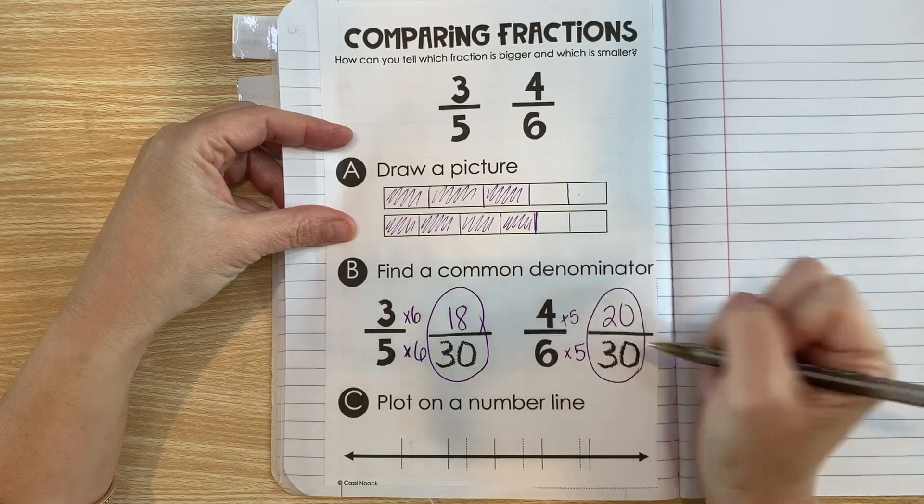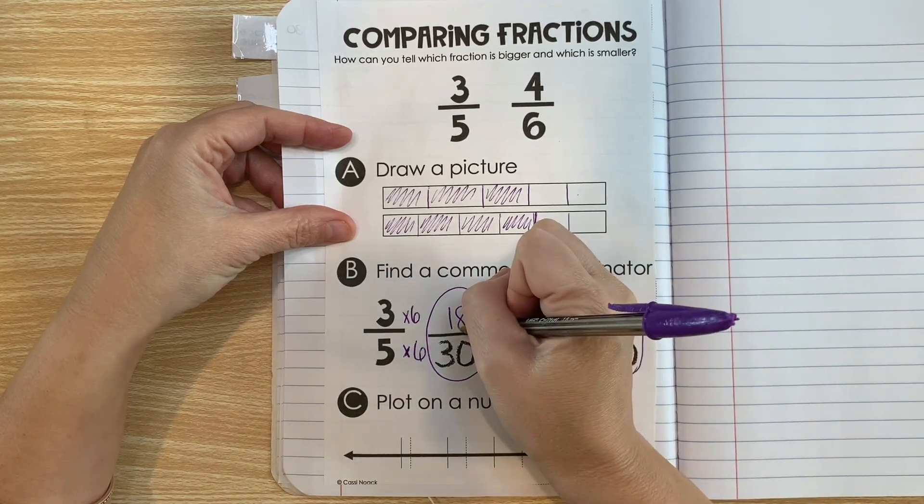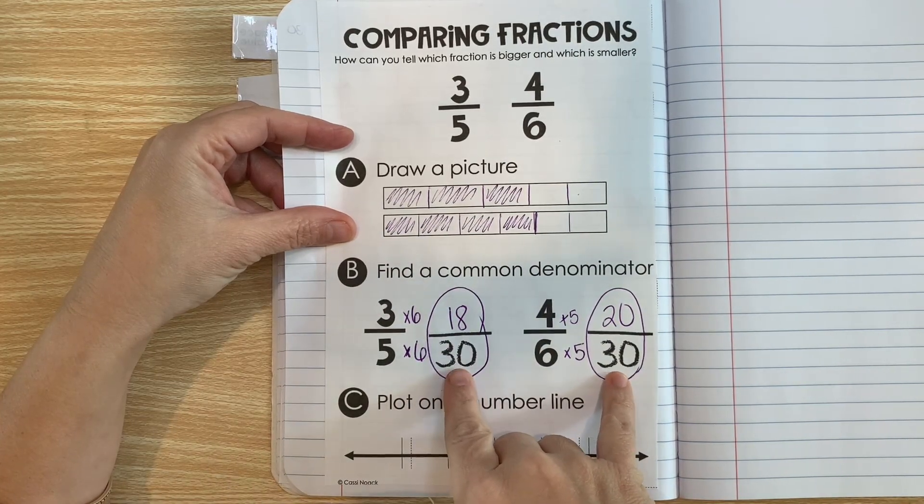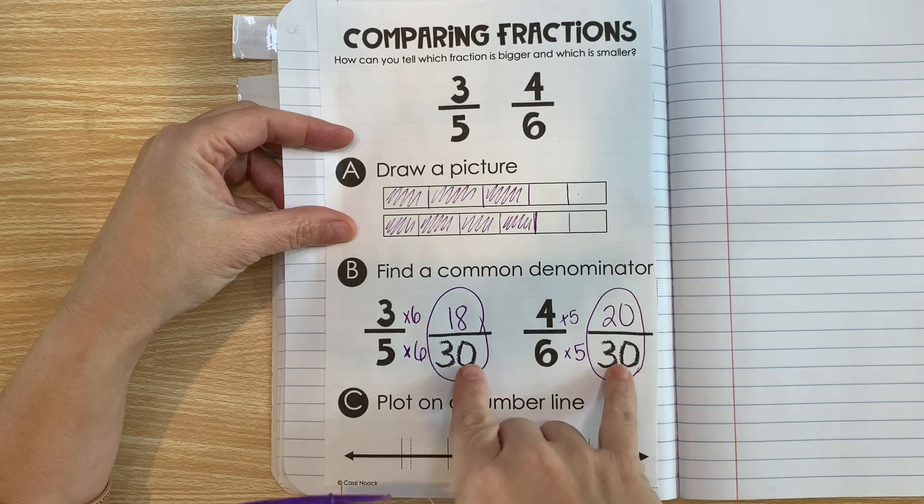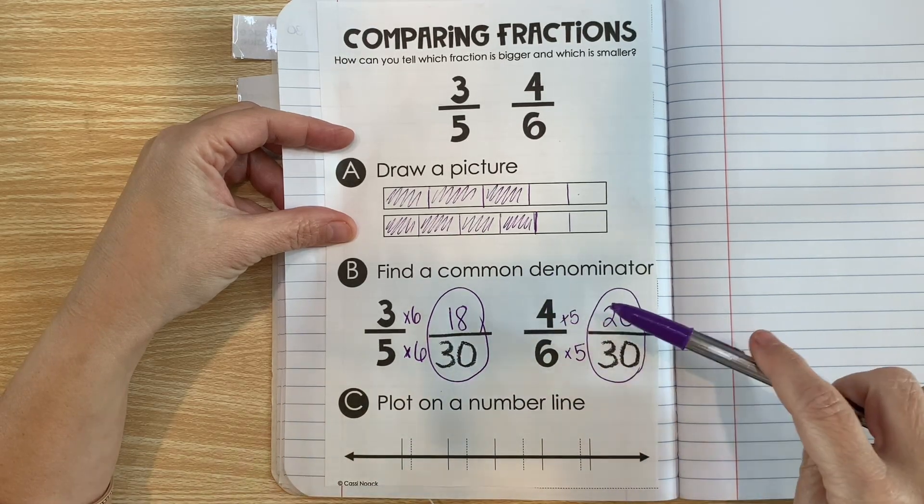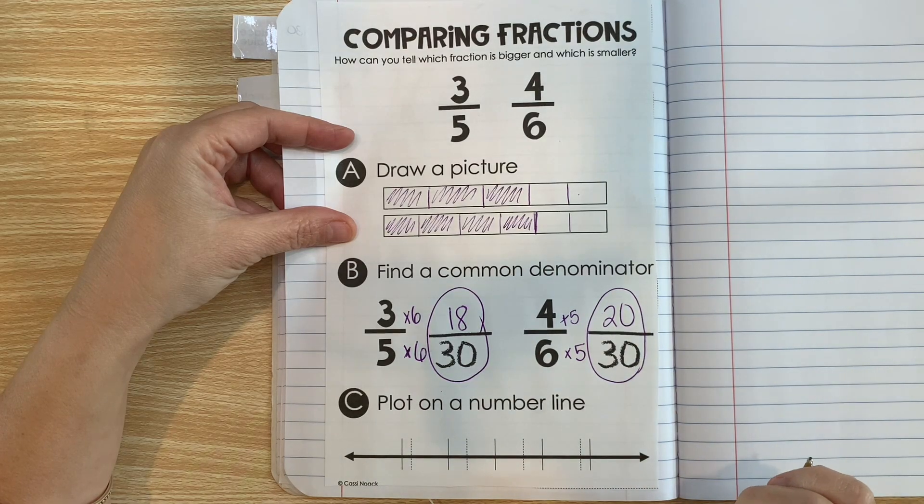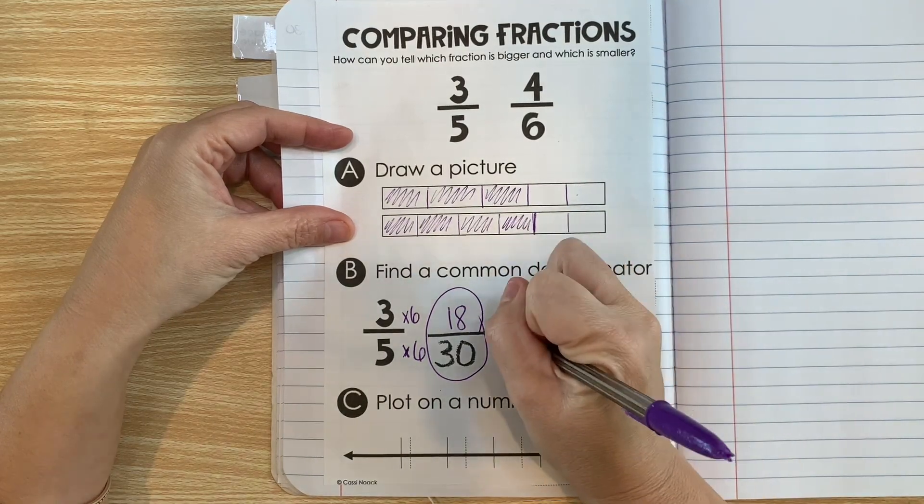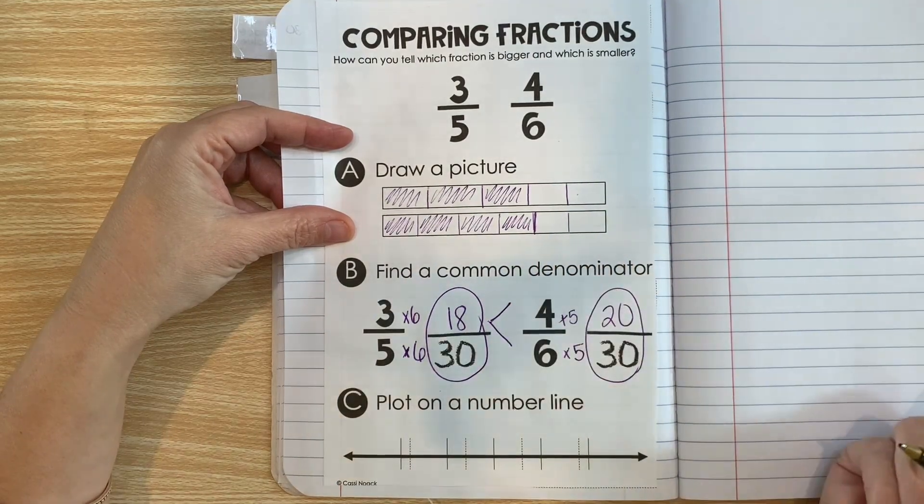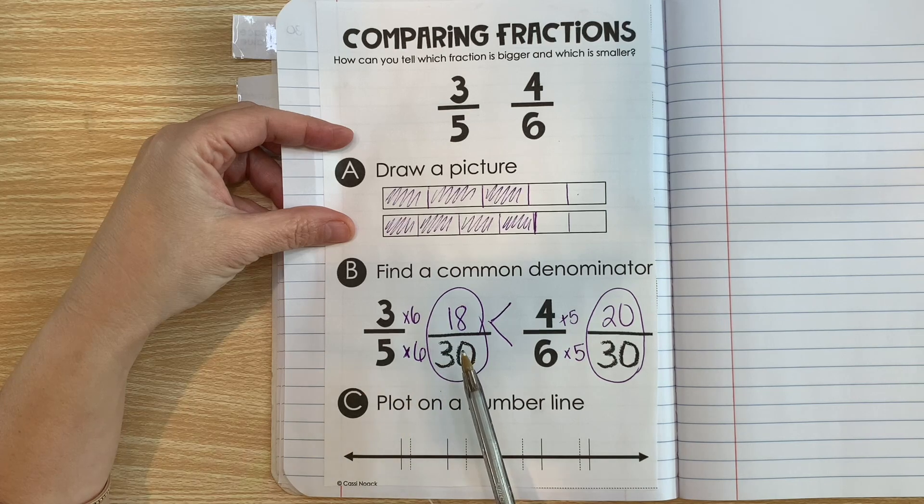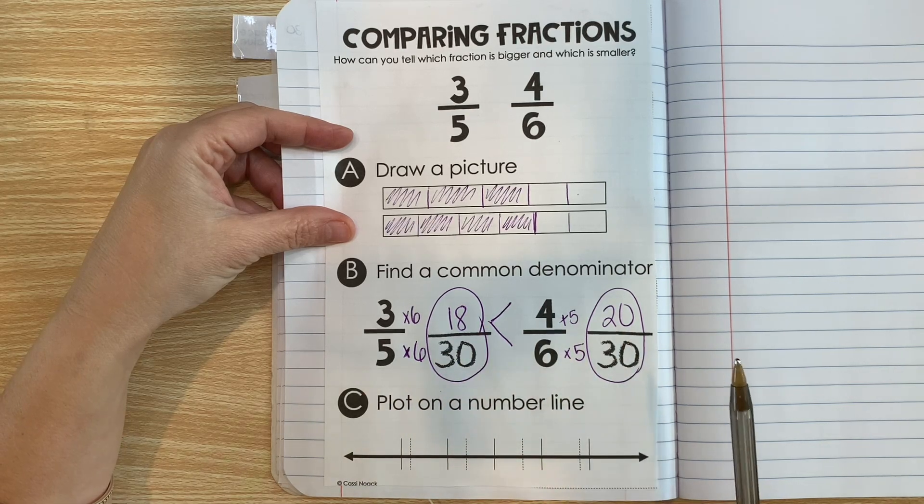So now we've created equivalent fractions. We have 18 out of 30 and we have 20 out of 30. Twenty out of 30 is still four-sixths, and 18 out of 30 is still three-fifths. They're just easier to compare now that they have the same number of parts. So since they have the same number of parts, whatever the numerator is tells us which fraction is bigger. Since 20 is bigger than 18, four-sixths is greater than three-fifths.